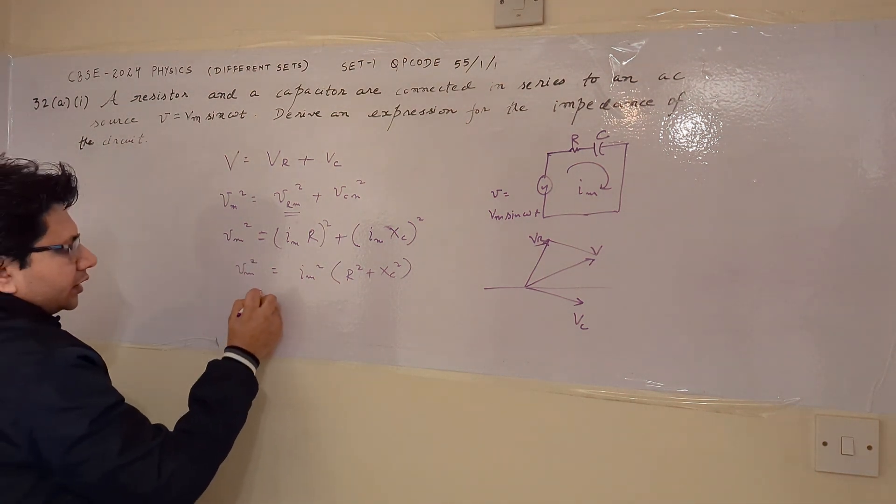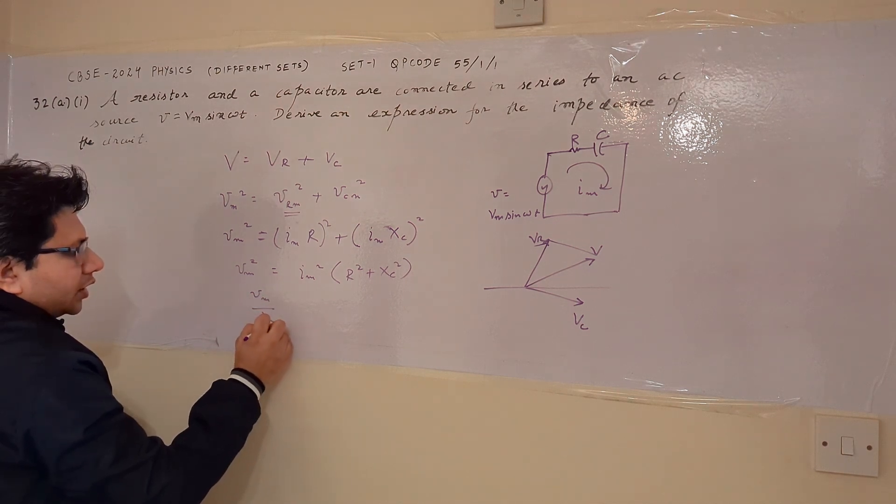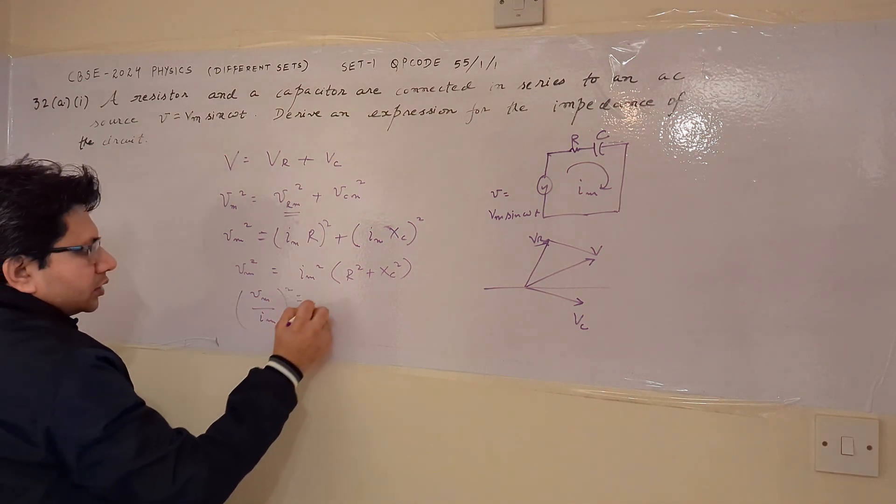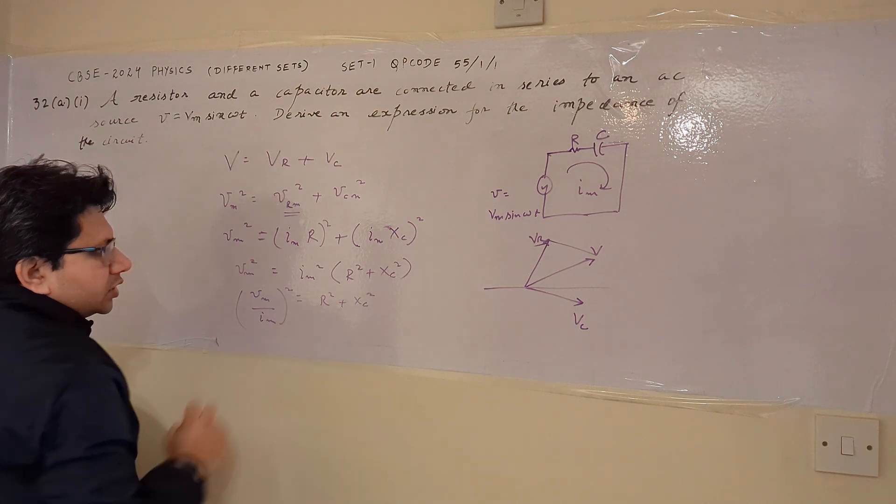Now from this particular equation, we can write it down as Vm upon Im whole square is equal to R square plus Xc square.